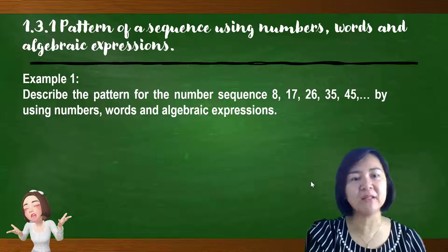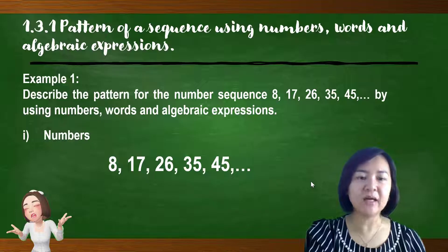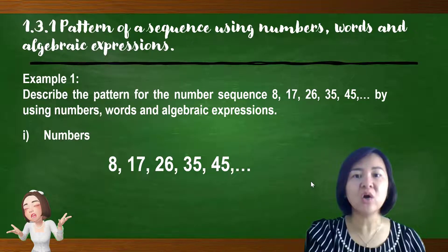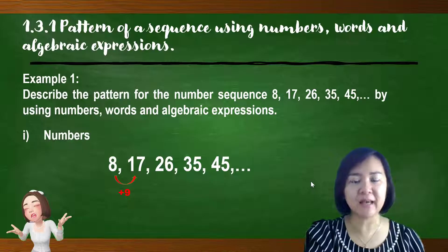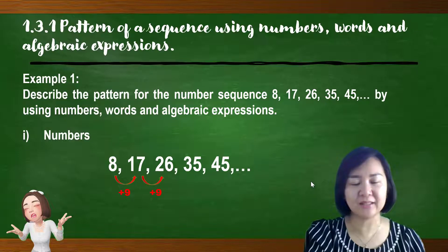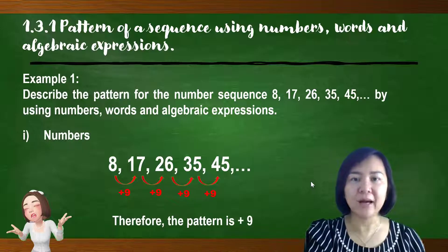Let's look at how we describe the pattern using numbers. We write out the sequence and identify the pattern. From this sequence we notice that it's increasing. From 8 to 17, the pattern is add 9. We check the continuous terms: from 17, adding 9 gives 26; adding 9 gives 35; adding 9 gives 45. Therefore, we can conclude that the pattern is plus 9.